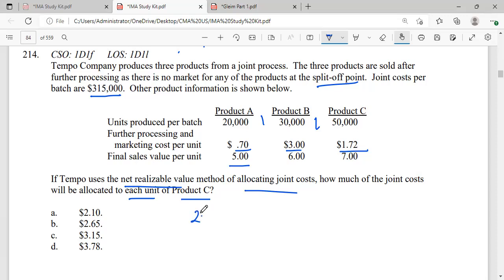Let me just do this first. For Product A: 20,000 into (5 minus 0.7) which makes it 4.3. Then 30,000 multiplied by (6 minus 3) which is 3. And then 50,000 multiplied by (7 minus 1.72), which is 5.28. Okay, now we have our net realizable values up here.